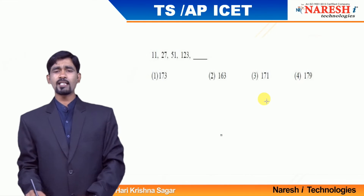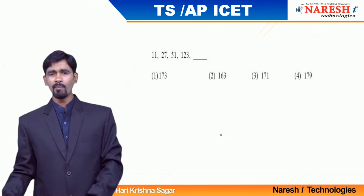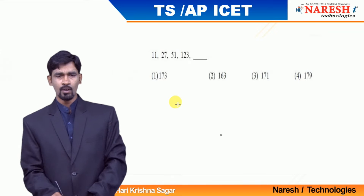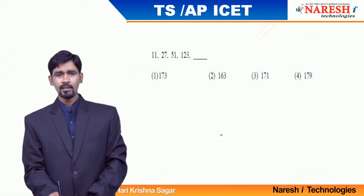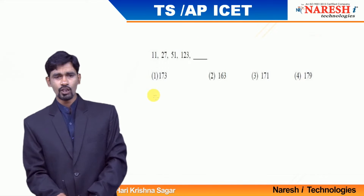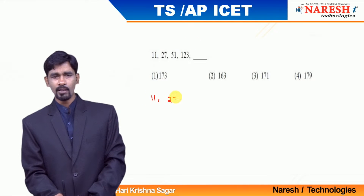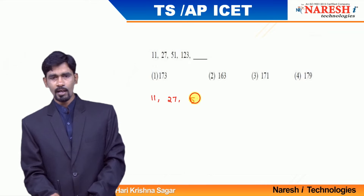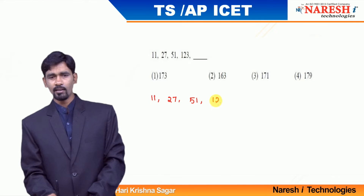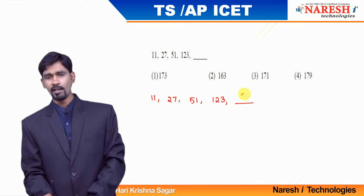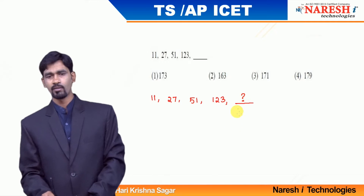By observing these numbers we can say initially the number is 11, next the number is 27, next the number is 51, next the number is 123. They are expecting you to find out what is the next term here.